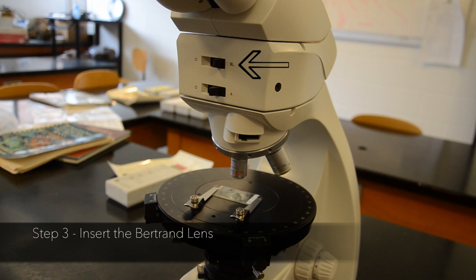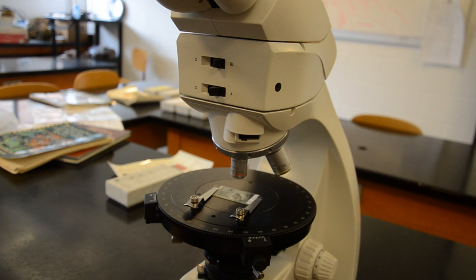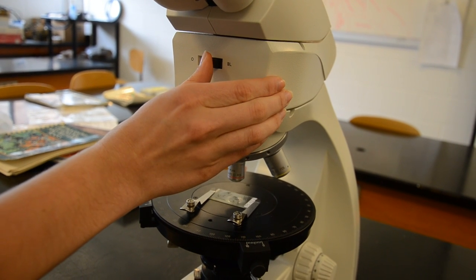Step 3: Insert the Bertrand lens. On this microscope, it is a switch labeled BL above the cross-polarizer. On many microscopes, you will also need to switch on a condensing lens here.